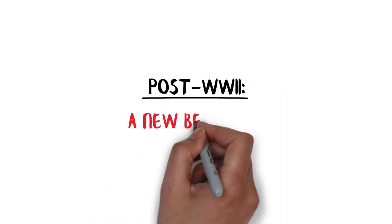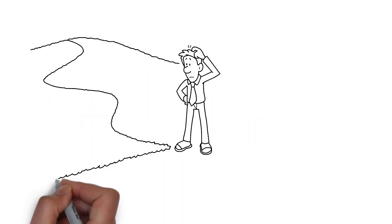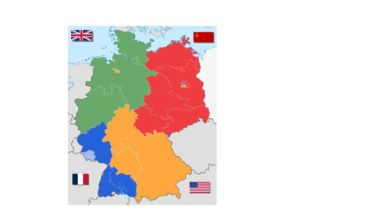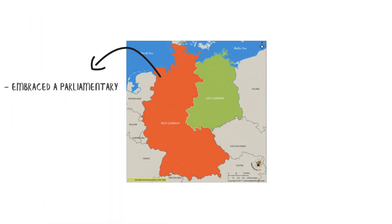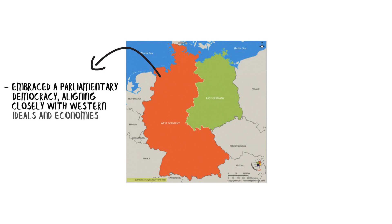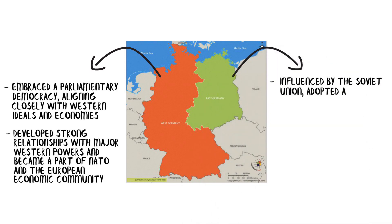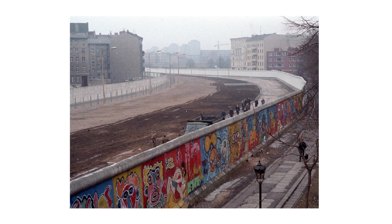German post-WWII political landscape: Post-World War II, Germany found itself at a historical crossroads, divided into four occupation zones controlled by the Allies. West Germany embraced parliamentary democracy, aligning with Western ideals and joining NATO and the European Economic Community. In contrast, East Germany, influenced by the Soviet Union, adopted a Marxist-Leninist-Socialist structure. The country was effectively split during the Cold War, creating two distinct German states with vastly different political and economic systems.